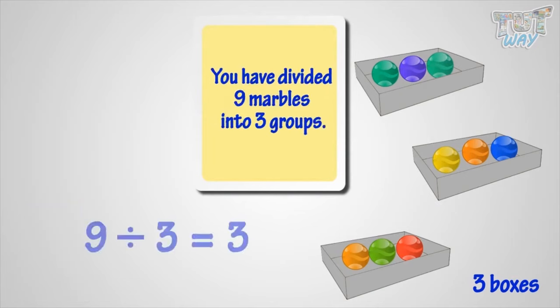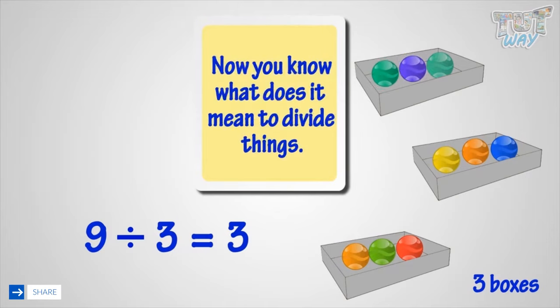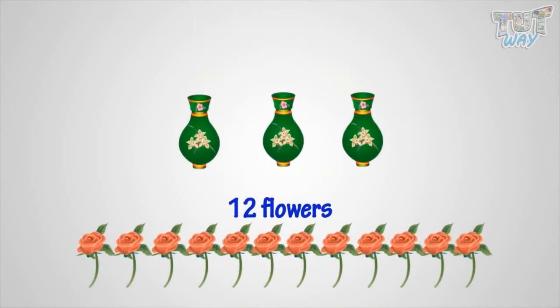You have divided nine marbles into three groups. Now you know what it means to divide things. There are twelve flowers. How will you put them equally in three flower pots? Let's see.